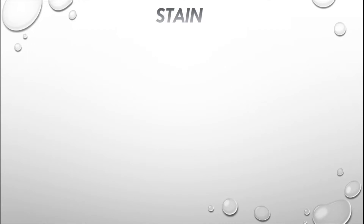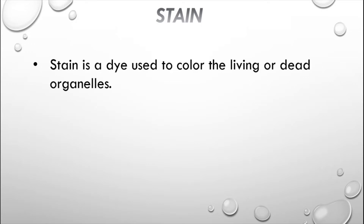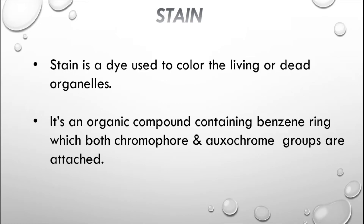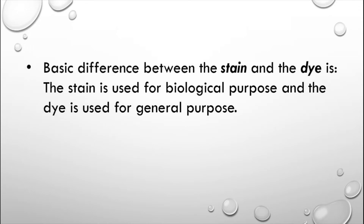You require a staining solution or stains for this purpose. What do we mean by a stain? A stain is a dye used to color living or dead organelles, and every colored compound is not a stain or dye. Basically, stain and dye are the same — an organic compound containing a benzene ring to which both a chromophore and an auxochrome group are attached. The chromophore group is responsible for giving the color, and the auxochrome group is responsible for ion formation. Only then does that compound become a stain or dye.